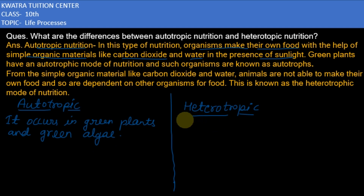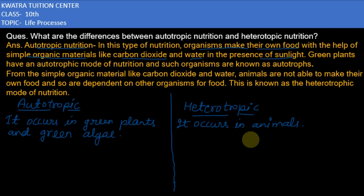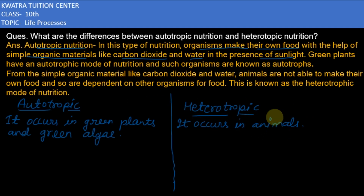On the other hand, heterotrophic nutrition occurs in animals. Heterotrophic animals are not able to make their own food — they are dependent on other organisms for their food. So they follow the heterotrophic mode of nutrition.